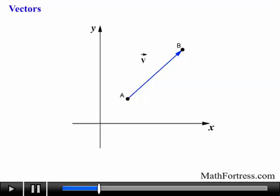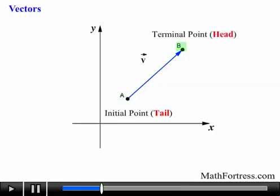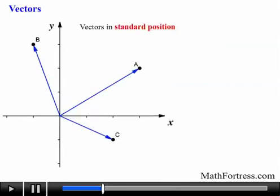When describing vectors, point A is called the initial point or tail of the vector. And point B is called the terminal point or head of the vector. When we talk about vectors we are usually referring to the standard position of a vector. These are vectors whose initial point or tail is located at the origin, with coordinate (0,0), and its terminal point or head is located anywhere else on the Cartesian coordinate plane.